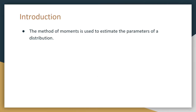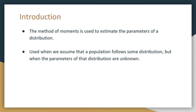For introduction, the method of moments estimator is used to estimate the parameters of a distribution. We use this when we assume that a population follows some certain distribution but the parameters of that distribution are unknown. For our class purposes we usually have one to two unknown parameters, but this can also be used to solve for more.